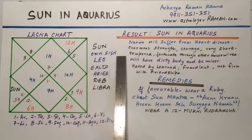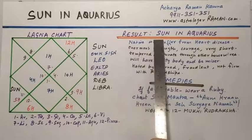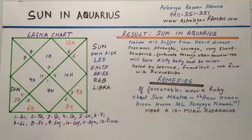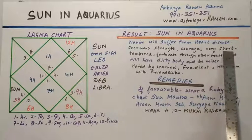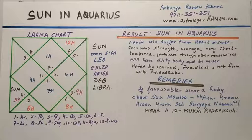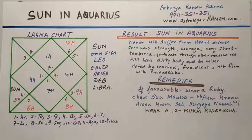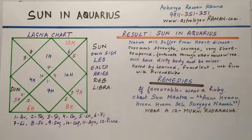Sun's own sign is Leo; Sun is exalted in Aries and debilitated in Libra. Now the results of Sun in Aquarius sign: if Sun is in Aquarius at the time of birth, one will suffer from heart disease, will have enormous strength and courage, will be very short-tempered, be fortunate through other people's wives, be hated by the learned, be firm in activities, be miserable, will have little wealth, will be fraudulent, not firm in friendship, will have a dirty body, and will be a miser.